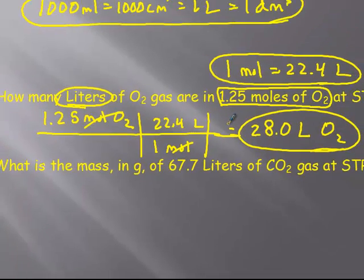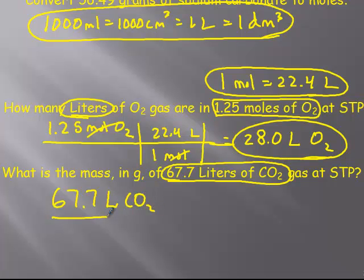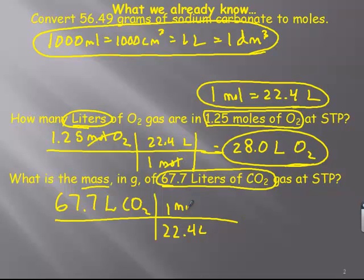All right, the last review question here then is 67.7. So again, the number, the unit, what it's of. So it's 67.7 liters of CO2. And we want to convert this time to mass. Now mass, if it just said mass, it would be in grams, but this one actually does say mass in grams. And again, it's a gas at STP. So I'm starting with liters. So I just did 22.4 liters is one mole of CO2, and that gets me rid of liters and I got moles.